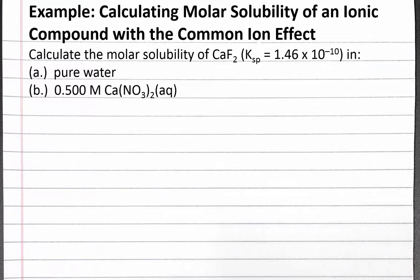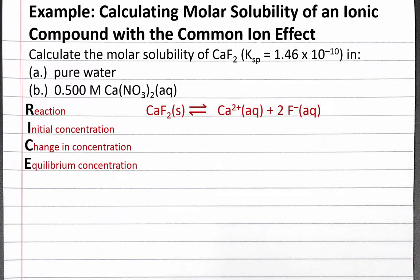In this example problem, we calculate the molar solubility of an ionic compound with and without the common ion effect. The problem reads: calculate the molar solubility of calcium fluoride, whose solubility product constant is 1.46 times 10 to the negative 10, in both pure water and in 0.500 molar calcium nitrate solution. We'll start by creating a RICE table for the dissolution of solid calcium fluoride in water.